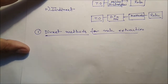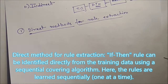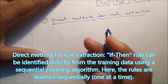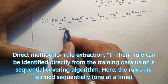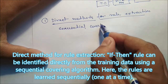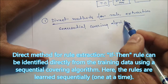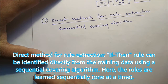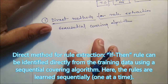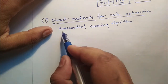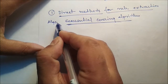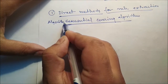Next we will talk about direct methods for rule extraction. If-then rules can be identified directly from the training data using a sequential covering algorithm. The rules are learned sequentially, one at a time. We apply a sequential covering algorithm to identify the rules from the training data. The basic steps of the sequential algorithm are as follows.